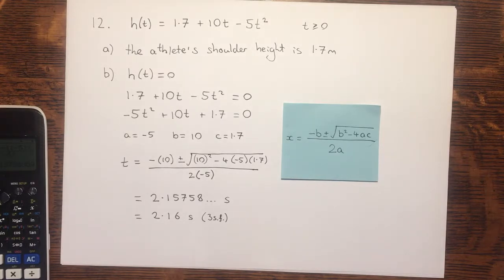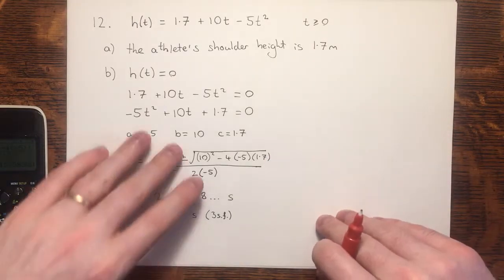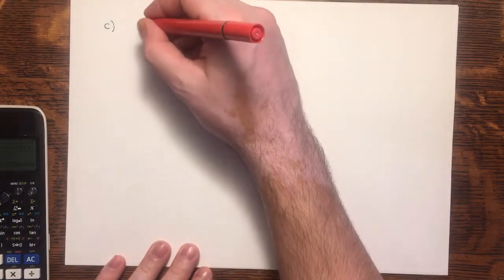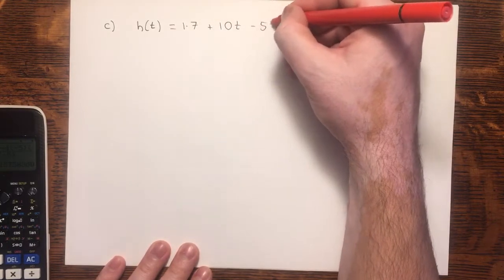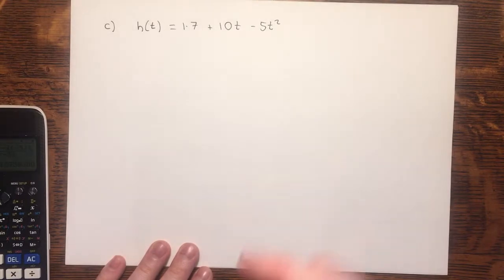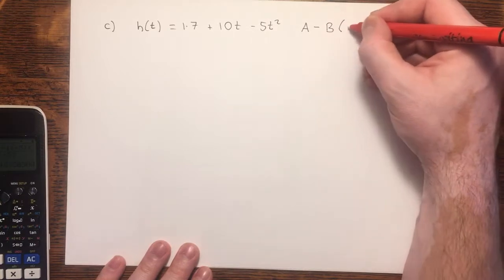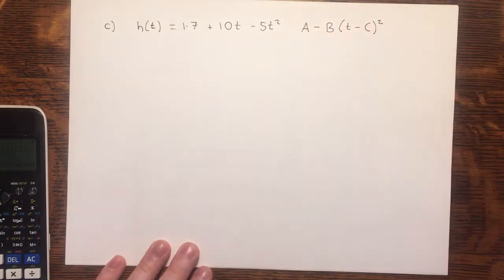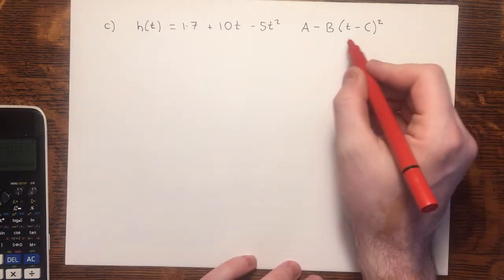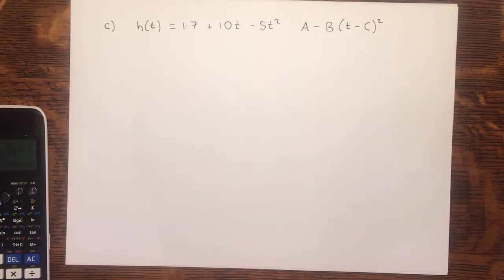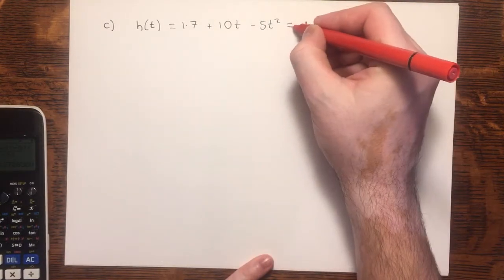In part C, it says, rearrange the function h of t into the form a minus b brackets t minus c squared. Let's have a look how that looks. We're told to take the function h of t, which is 1.7 plus 10t minus 5t squared, and rearrange it into the form a minus b, t minus c squared. And we need to give the values of the constants a, b and c. So, although this is slightly different to what you might be used to seeing, what we have here is a version of the completed square. So, we're going to take this and rearrange it into this form.